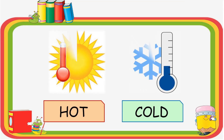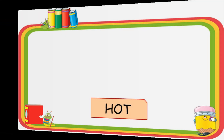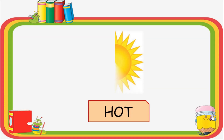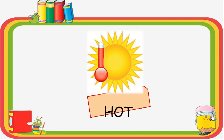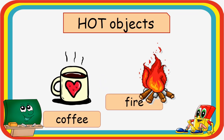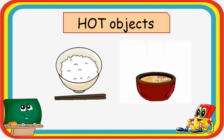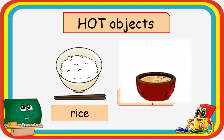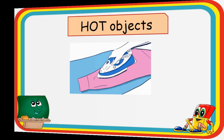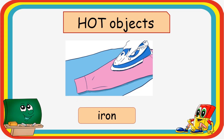Let's have first the hot and cold things. Here are the examples of hot objects: coffee, fire, rice, soup, and iron.